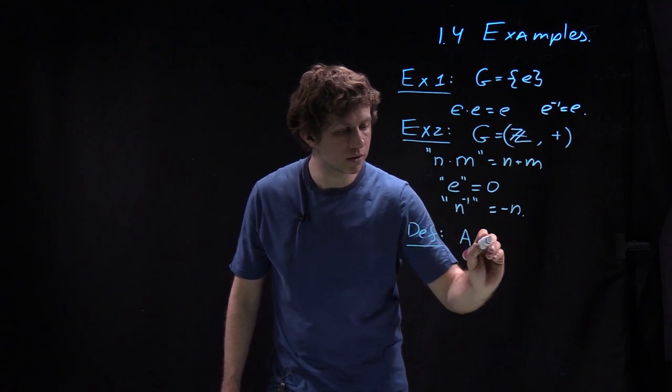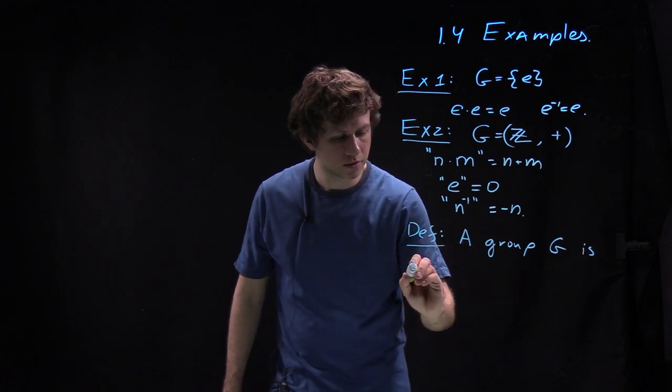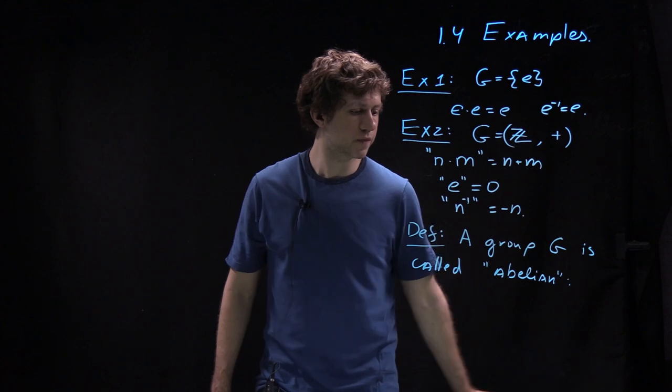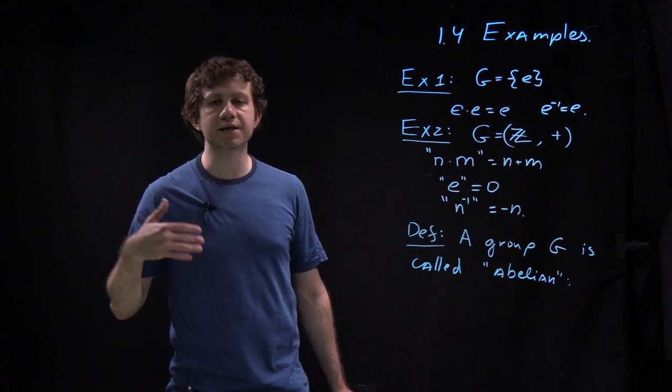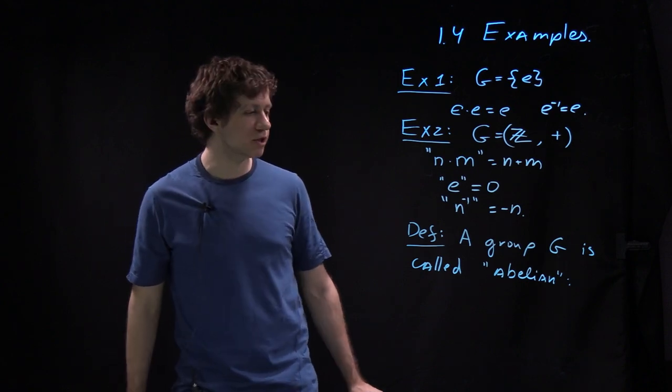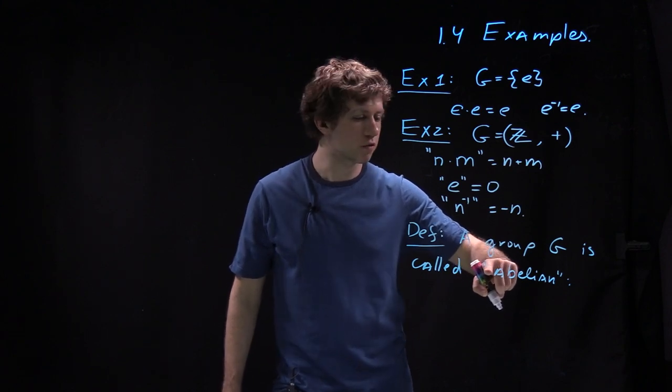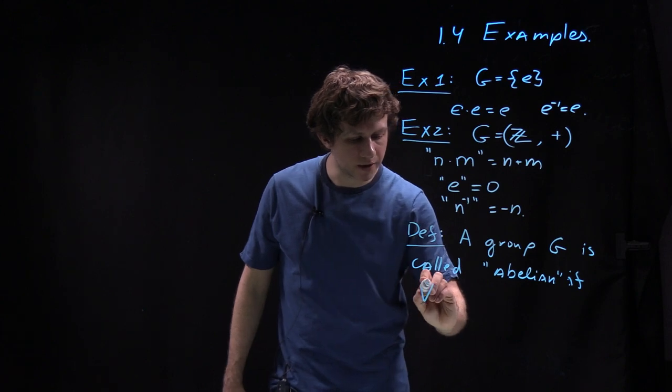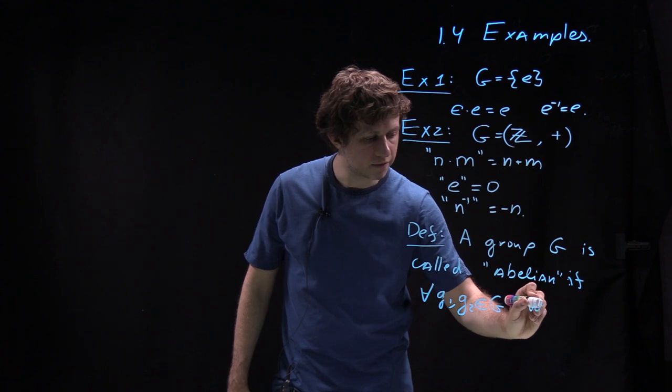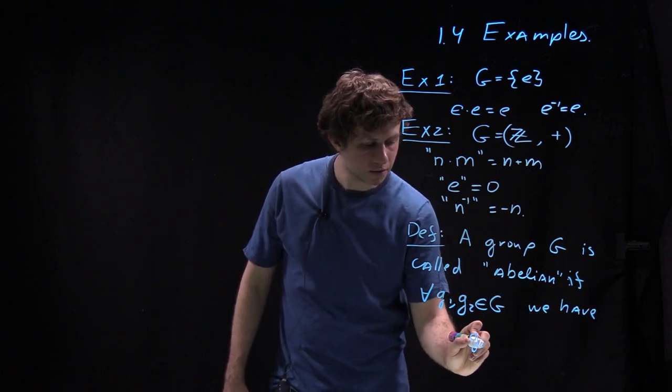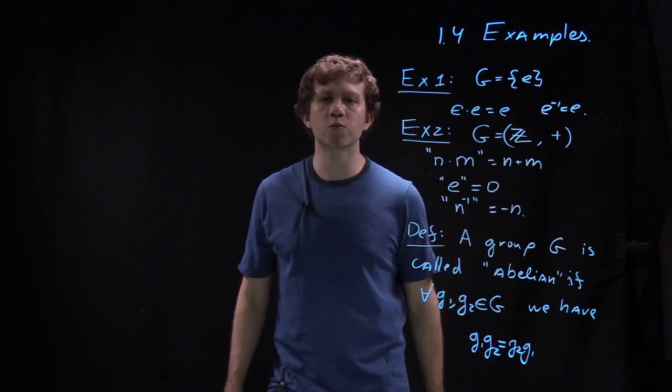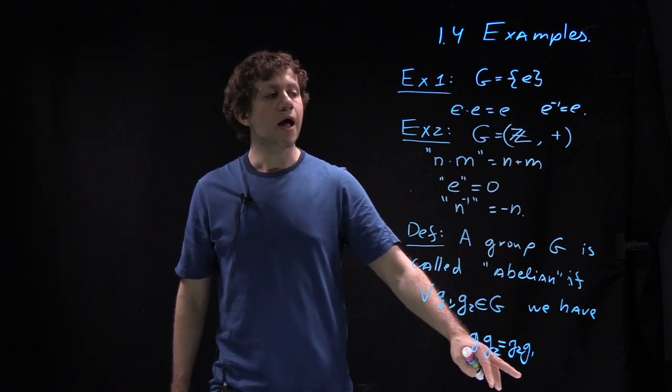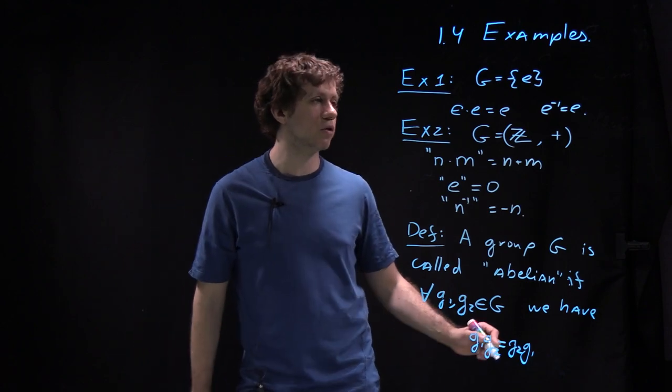So let me give a definition here. So a group G is called abelian for Niels-Henrik Abel, a mathematician who proved that the equation of degree five doesn't have solutions in radicals, the fact I mentioned in the first lecture. So he studied groups deeply because of all this theory, and so that's in honor of him. If for every two elements, g1, g2, and g, we have g1, g2 equals to g2, g1. So this is a definition which makes out of this complicated, not necessarily commutative structure, something much simpler. So in abelian groups order does not matter. A lot of important groups are abelian, but a lot are not.